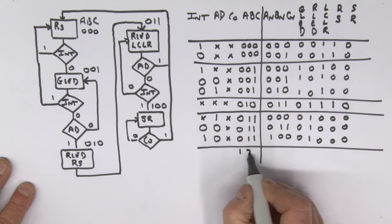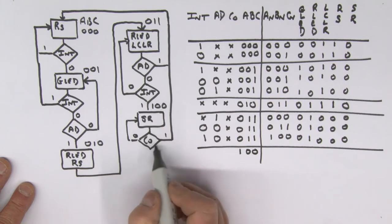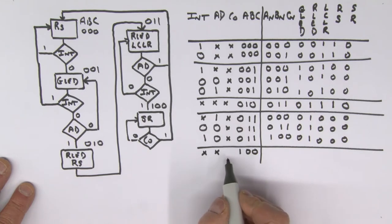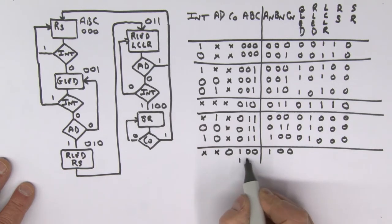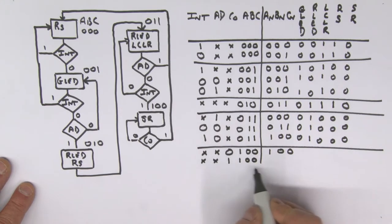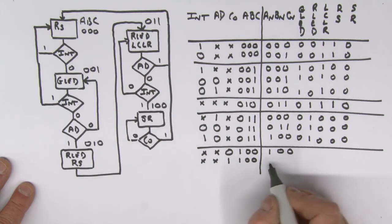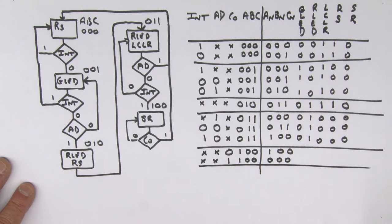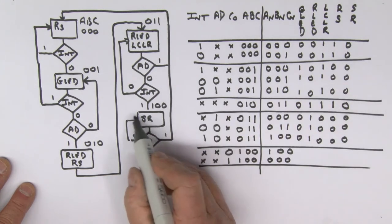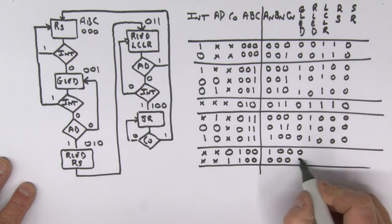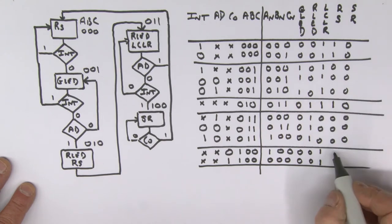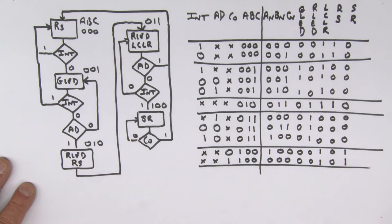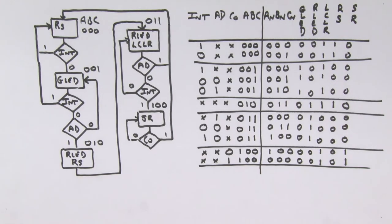For state 100: I'm only looking at carry out — don't care about intrusion or AD. If carry out is zero, stay in state 100. If carry out is one, move back to state 000. Outputs in state 100: green LED off, red LED off, clear inactive (one), reset zero, siren is one — this is the siren state.